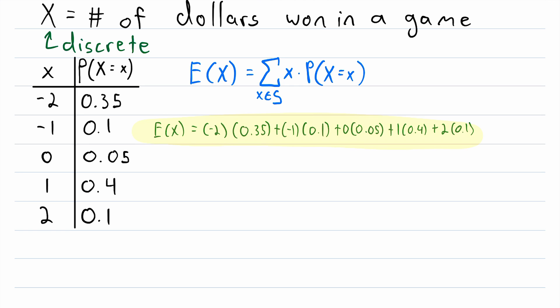So this here is the expected value of the random variable x. Now, of course, we just have to do the computation. So we have negative 2 times 0.35, that's negative 0.7.